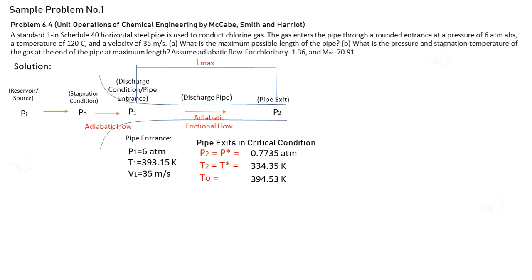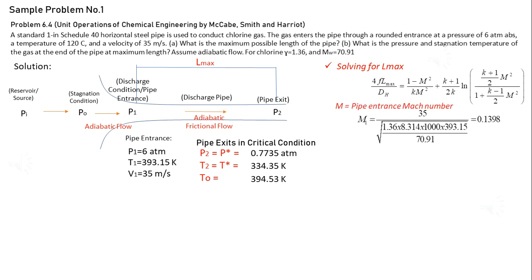Solving for Lmax, we have the equation. Let's define the variables. m is the pipe entrance Mach number, which is equals to 0.1398. dh is the pipe diameter which is equals to 0.0266 meters. And f is the friction factor of the pipe.